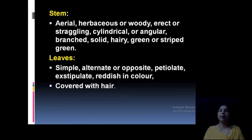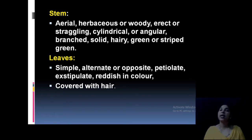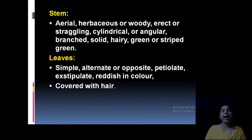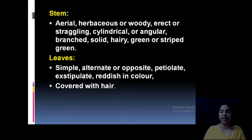The aerial stem may be woody or erect, sometimes straggling, and cylindrical or angular in appearance. Branched stems are also observed. Stems are usually hairy and green. Leaves are usually small, very simple, and alternately or oppositely arranged. They are petiolate and exstipulate. Leaves can be reddish in color — example: Amaranthus, the common cheera. Stems and leaves are usually covered with hair.